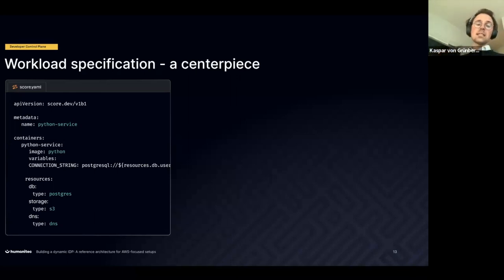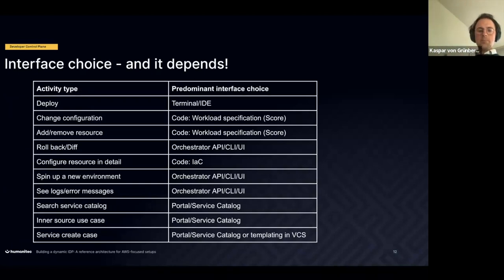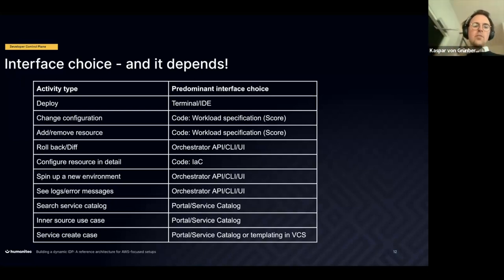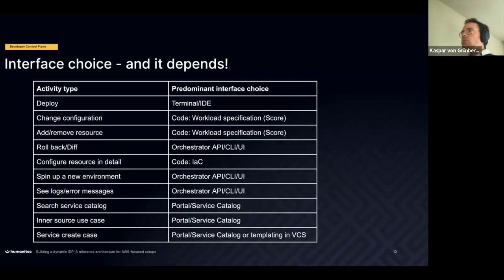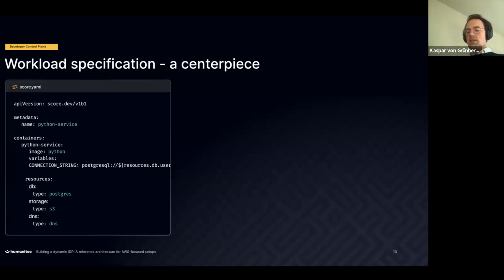You have one workload specification and it sits next to your workload source code. You then localize it on an environment-by-environment basis. With every single deployment, the developer orders what they need. The beauty here is you can actually add a resource by adding another resource definition to the workload specification, and by just doing a Git push it will create that resource, wire it up, promote it to the next environment, and do that in the next environment as well.